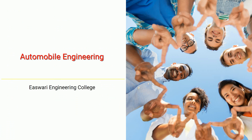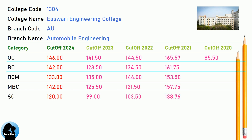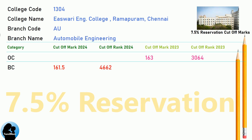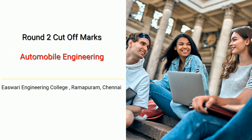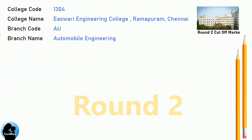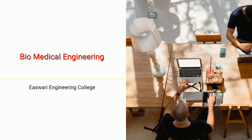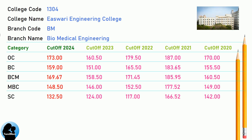DNA Cut-Off for Eshwari Engineering College in Automobile Engineering, AI and Machine Learning. DNA Round 2 Cut-Off for Eshwari Engineering College in Automobile Engineering.